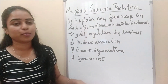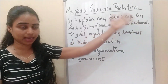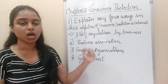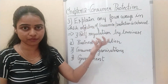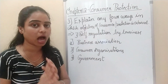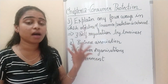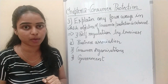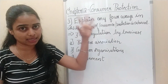In today's video, we are going to learn the third question — explaining the four ways in which the objectives of consumer protection are achieved. So what are the ways and means to achieve this objective? That is the question.